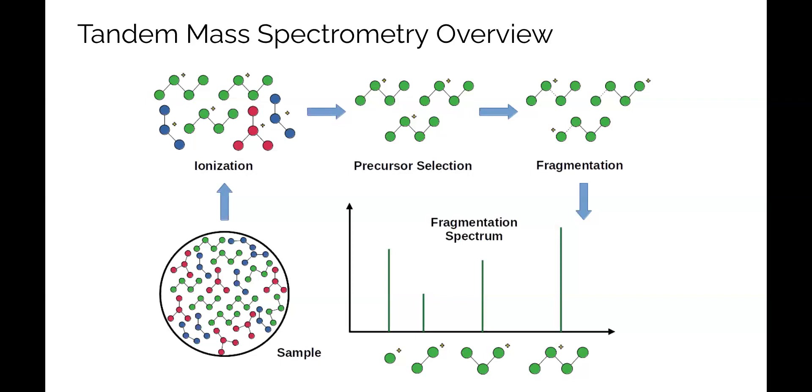By focusing on a narrow mass to charge range, it is possible to select specific precursor ions with a particular mass and send them for fragmentation. The fragmentation process, often involving energetic collisions with gas particles, results in the molecule fragmenting apart through the breaking of bonds. This creates a distribution over molecule fragments, known as the fragmentation spectrum that reflects the compound structure.